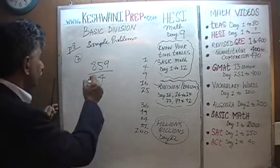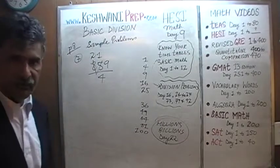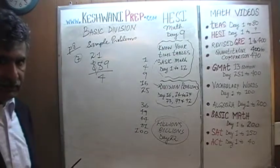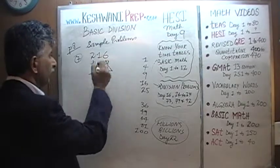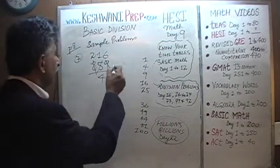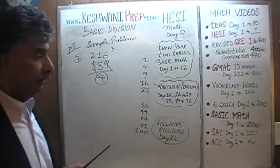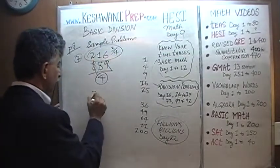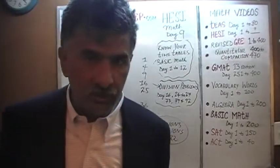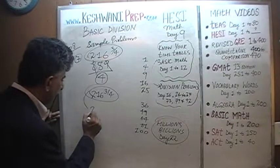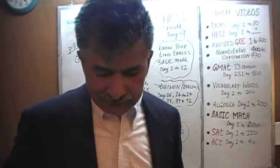How many 4s does 8 have? Two. How many 4s does 5 have? One; remainder 1 joins 9 to make 19. 19 has four 4s; 4×4=16, remainder 3. That remainder of 3 must be divided by 4. The answer is 216 and 3 quarters. If the answer choices are decimals, 3/4 = 0.75, so the answer is 216.75. Note: after the decimal point, each digit is announced separately — two-one-six point seven-five, not seventy-five.